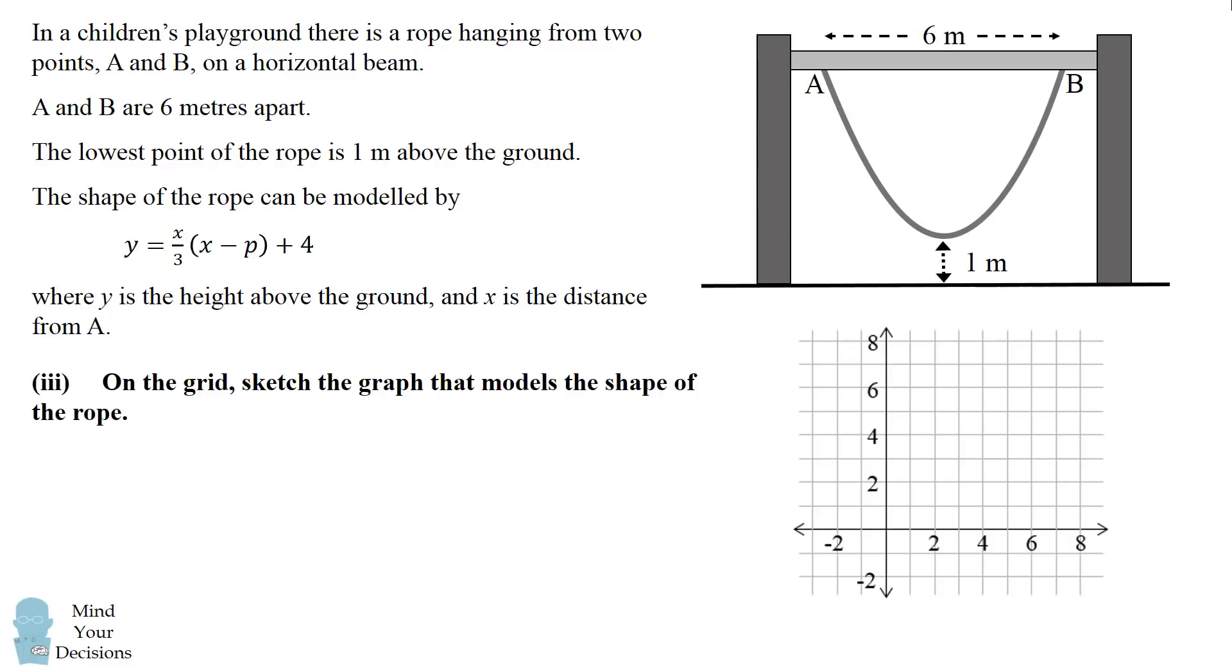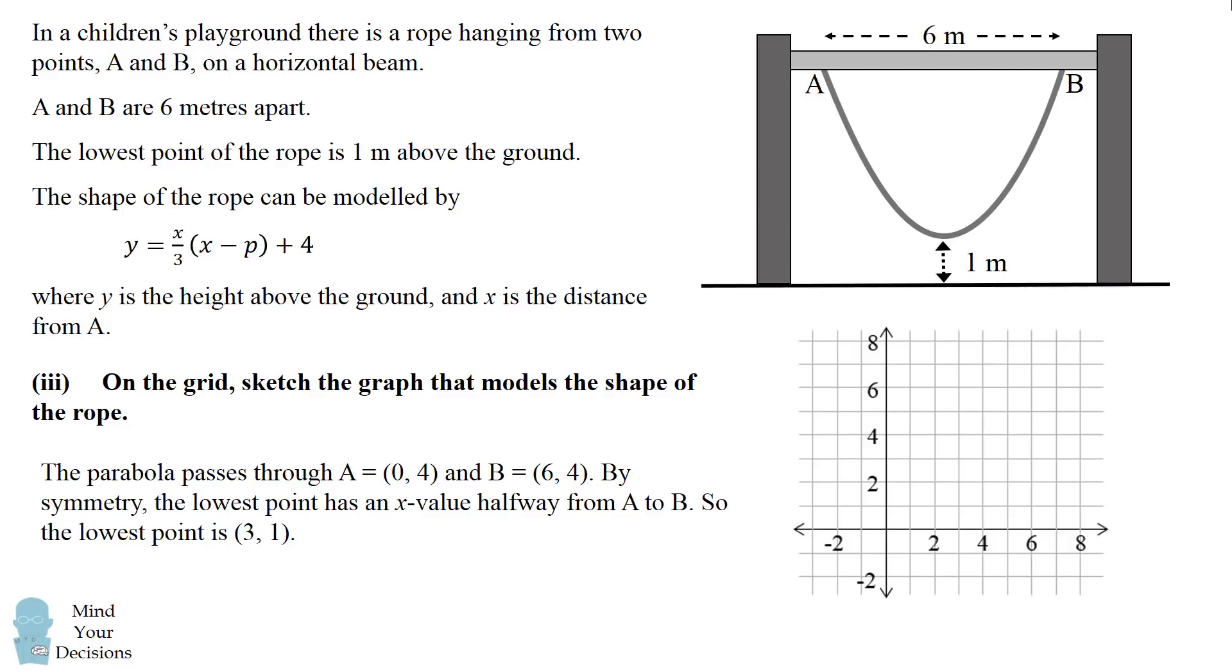Now for part 3, we need to sketch the graph that models the shape of the rope. What I would do is I know the location of points A and B. The parabola passes through point A which is 0, 4 and B which is 6, 4.